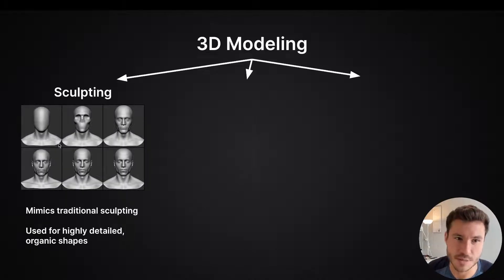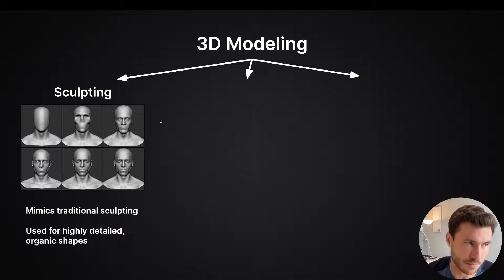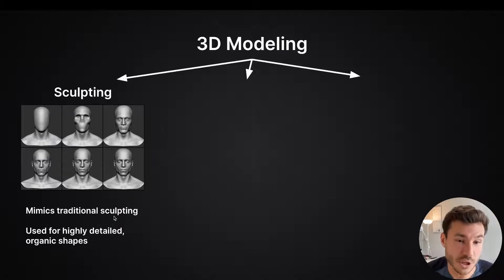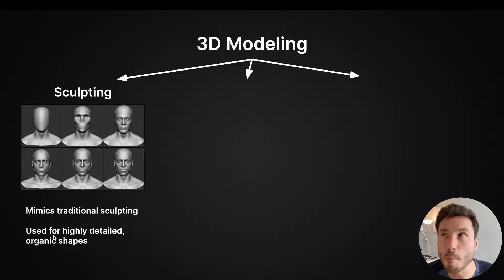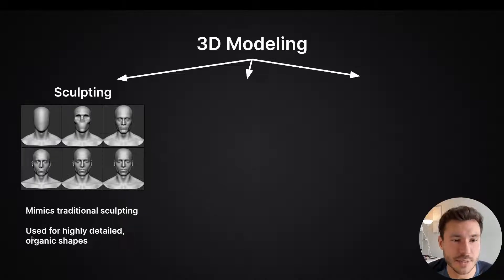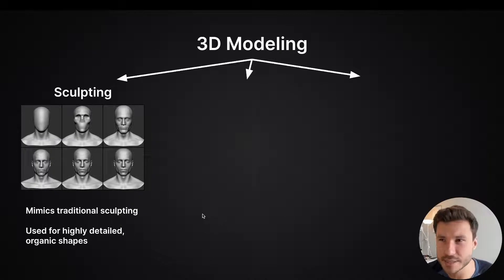Sculpting — in ZBrush or in Blender — mimics traditional sculpting and is mostly used for highly detailed organic shapes, such as characters, monsters, people, and faces.